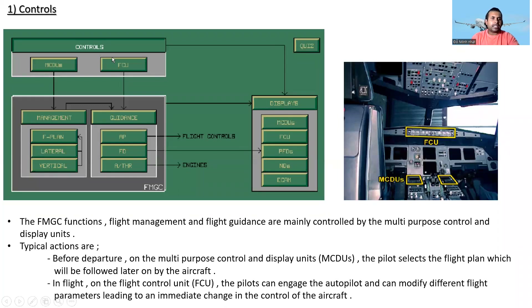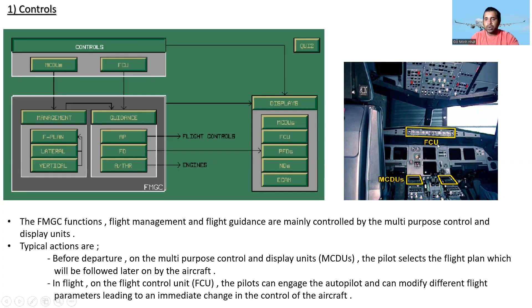Here you can see the controls: MCDU, Flight Control Unit, management, guidance, flight plan, lateral, vertical, autopilot, flight director, auto thrust. And the displays: MCDU, Flight Control Unit display, PFD displays, Navigation Displays, and others. The controls are divided into two parts — MCDU and Flight Control Unit. The flight management and guidance functions are mainly controlled by the Multipurpose Control and Display Unit.